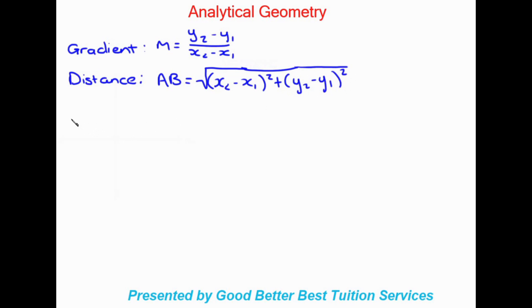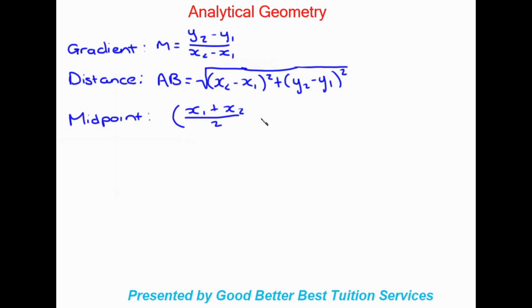Moving on to the next one, we will be looking at midpoint. The equation for midpoint is going to be x1 plus x2 over 2, semicolon, y1 plus y2 over 2. Because x is on the left hand side, we know that this will be the x value of the midpoint, and on the right hand side this will be the y value of the midpoint.